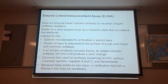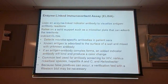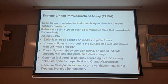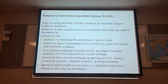Enzyme-linked immunosorbent assay — this is the test we do on this campus in lab as a simulated HIV test. It uses an enzyme-linked indicator antibody to visualize the antigen-antibody reaction and relies on a solid support structure, in this case a microtiter plate that can adsorb the reactants. The ELISA is an indirect test that detects microbe-specific antibodies found within a patient's sera.